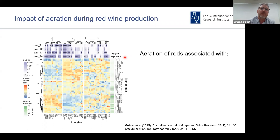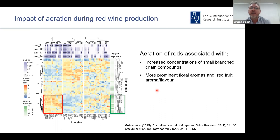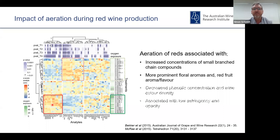In summary for the red wine section — this is a heat map summarising four years of chemical data across different vintages and regions: increased concentrations of small branched-chain compounds, more prominent floral aromas and red fruit aroma and flavour; decreased phenolic concentration and decreased wine colour density in aerated wines. Those phenolic and colour factors are associated with lower astringency and opacity in the non-aerated wines.